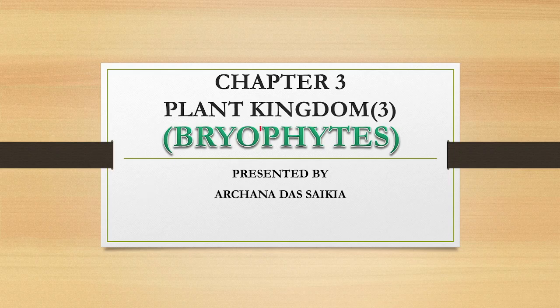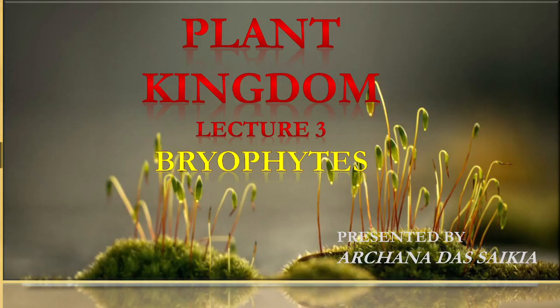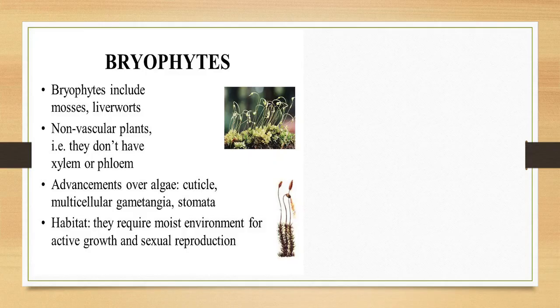In this series of Plant Kingdom lectures, today we will move on to the third division, that is Bryophytes. Bryophytes are those plants which are terrestrial — they grow on land — but they require water for their reproductive processes. As such, they are also sometimes referred to as the amphibians of the plant kingdom.